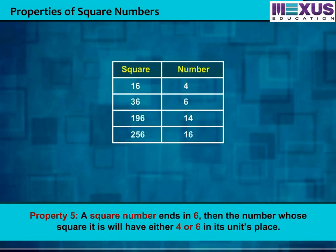If a square number ends in 6, then the number whose square it is will have either 4 or 6 in its unit place. From the table you can see there are examples that a square number ending in 6 has either 4 or 6 in its unit place.